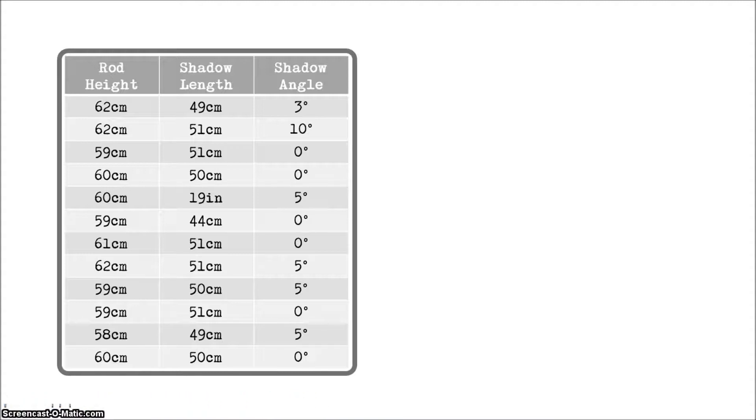So, we've got all of these points of data, and right away, some things start to become apparent. You look in this shadow length column, for example. We got 49, 51, 51, 50, 19. What? This right away throws up red flags. We were all using the exact same kind of ring stand. We were doing this at the same time of day. Where is this 19 coming from? Well, if you look right next to it, it has the letters IN. That means this 19 is in inches.